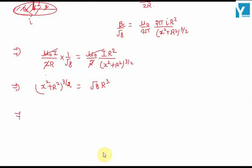Now squaring both sides, x square plus R square raised to the power of 3 is equal to 8 times R raised to the power of 6.